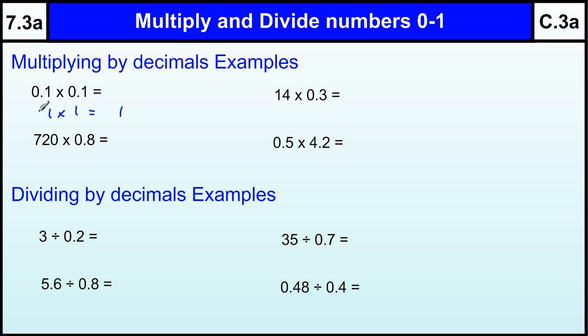If you look at this number, this number is 10 times smaller than this number, and 0.1 is 10 times smaller than 1. So to get to the answer we're dividing by 10 and divided by 10, so we're dividing by 100.